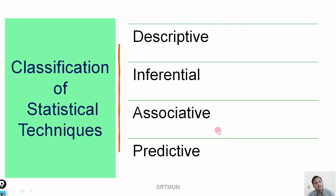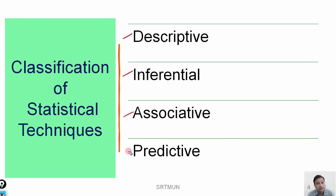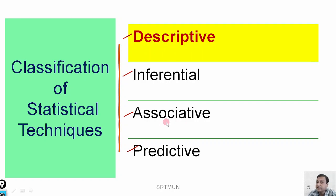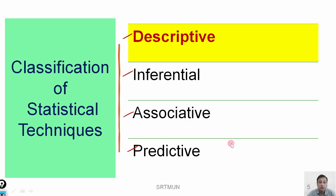The objective of this lecture is to make you familiar with reading and interpretation of table output in SPSS. Statistical techniques are classified into four parts: descriptive, inferential, associative, and predictive. For week four, we will start with descriptive statistics first. Once descriptive statistics are completed, we will shift to inferential, then associative, and then predictive statistical techniques. Here in this lecture, we are starting with descriptive statistics.